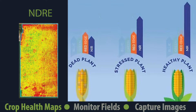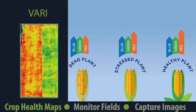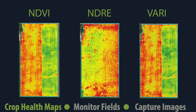VARI does not require a crop health specific camera and it's useful for filtering out the effects of the atmosphere in your imagery, which can change from day to day. Depending on the time of year and imagery you have access to, you may want to look at one type of crop health map over another.